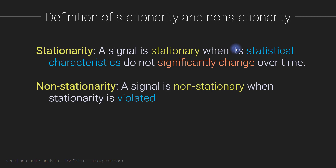The first ambiguity is what we mean by 'statistical characteristics' — these refer to descriptive statistics, not inferential statistics. The second ambiguity is what it means for descriptive statistics to 'significantly change over time,' which implies dependence on statistical tests, thresholds, p-values, or other inferential statistical values. The third source of ambiguity concerns time windows — which time windows to use.